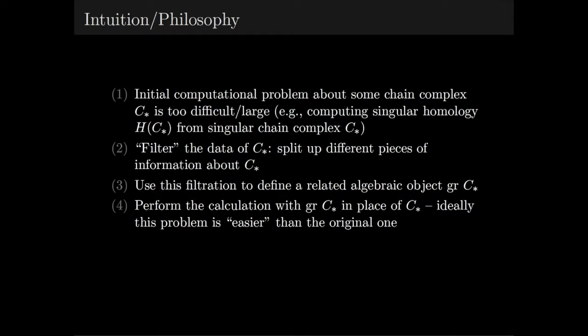Once you have this related algebraic object, you perform the calculation with gr of C star in place of C star. Ideally this problem is easier in some sense than the original one, at least layer by layer.